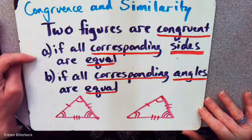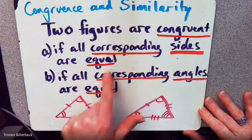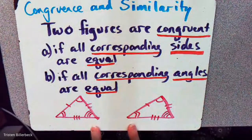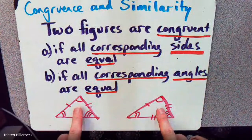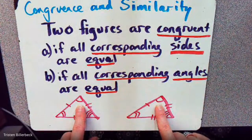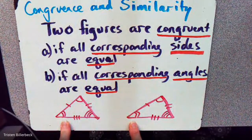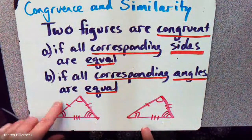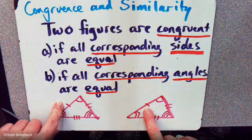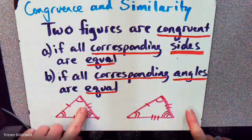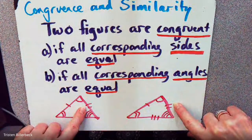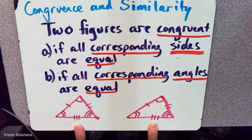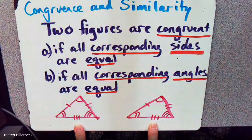Two figures are congruent if all corresponding sides are equal and if all corresponding angles are equal. Single arcs mean those two angles are corresponding and equal, two arcs means those two are corresponding and equal, and three arcs means corresponding and equal. One congruency tick means that side corresponds to that side and they're equal; two congruency ticks means two corresponding sides are equal; and three congruency ticks mean those two corresponding sides are congruent or equal.